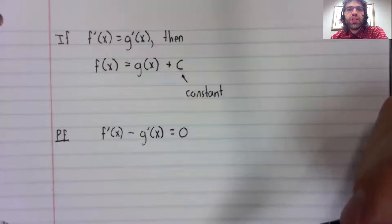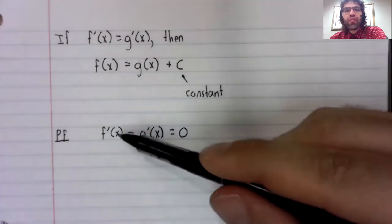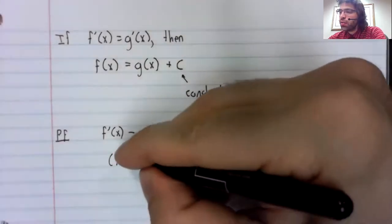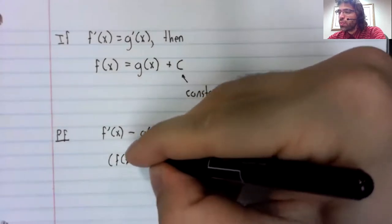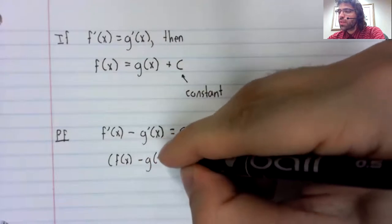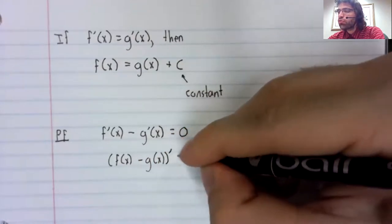Now, the derivative of a difference is the difference of the derivatives. So if we have f prime minus g prime, we can rewrite that as f minus g prime.